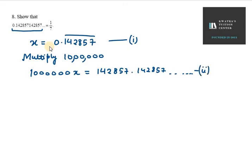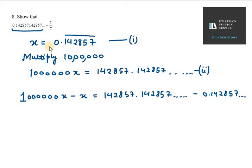Now we subtract equation 1 from equation 2. We get 1,000,000x minus x equals 142857.142857 and so on, minus 0.142857 and so on.